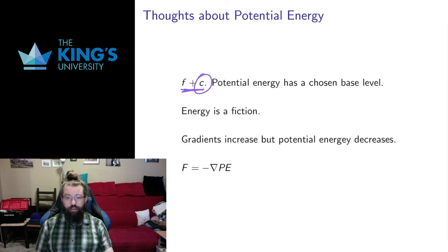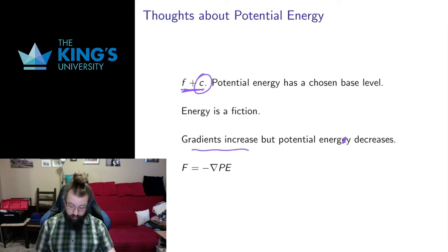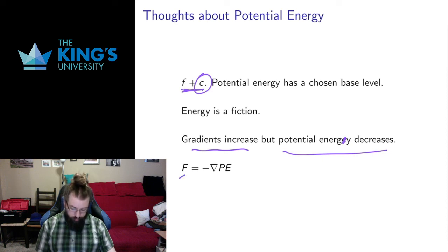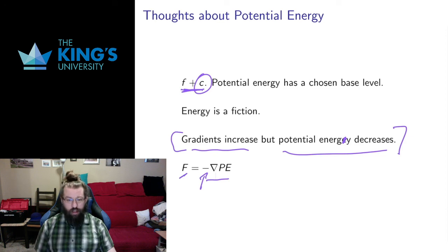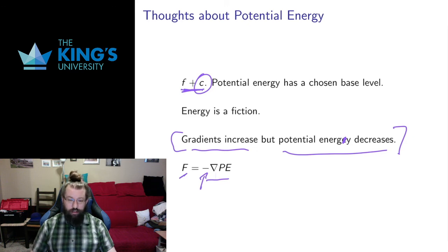Typically we want to say that objects want to reduce their potential energy, and that raises a small issue: gradients point in the direction of increase, but the principle of physics says objects want to reduce their potential energy — they want to move in a direction that loses potential energy. So the force that comes from the gradient of potential energy should actually have a negative sign. The fact that gradients increase but potential energy wants to decrease is going to cause us a headache throughout this discussion. Anytime we're talking about forces and potential energies, this negative sign will have to float around, and we have to remember that the force is the negative gradient of potential energy.